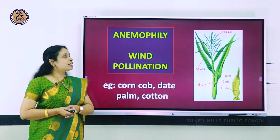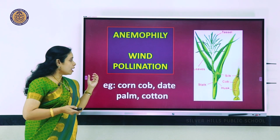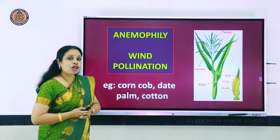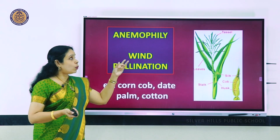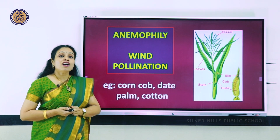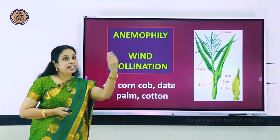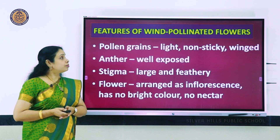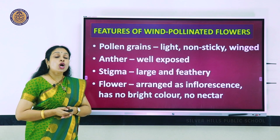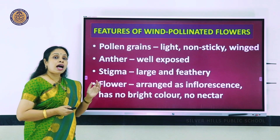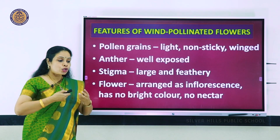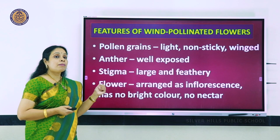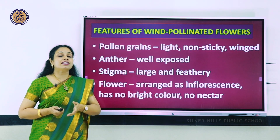Moving on to wind pollination - the scientific term is anemophily. It is shown by corn, date palm, cotton, etc. The tassels of corn are well-exposed stamens that release pollen grains into the air. Features of wind-pollinated flowers: pollen grains are light, non-sticky and sometimes winged; anthers are well-exposed; stigma is large and feathery; and if flowers are small they may be arranged together as an inflorescence.